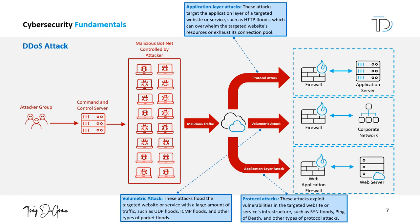DDoS attacks are the fourth attack vector. A distributed denial of service attack, or DDoS attack, is a type of cyber attack that aims to make a website or online service unavailable by overwhelming it with a large amount of traffic from multiple sources. The goal of a DDoS attack is to disrupt normal traffic to a website or service, making it unavailable for legitimate users.